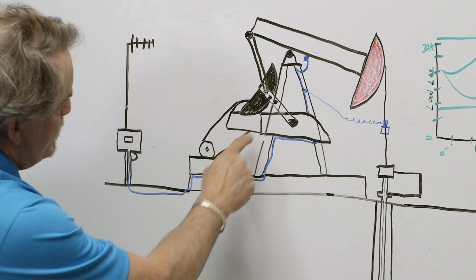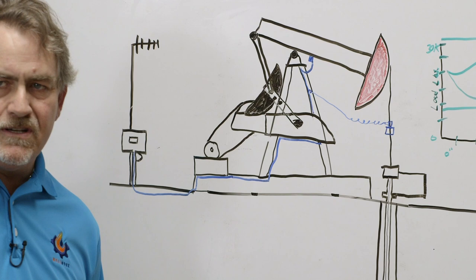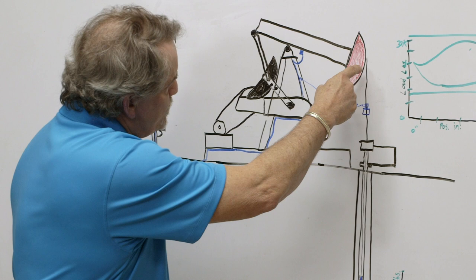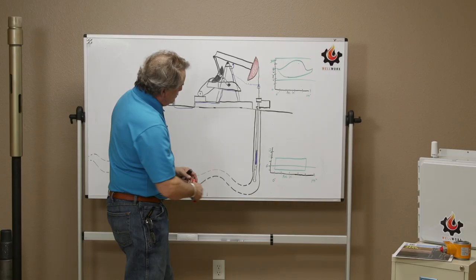Electric motor rotates belts, rotates the gearbox, which in turn rotates the crank. That pushes the pitman arm up, which is going to force the well head down. Connected to the horse's head is the polish rod, which attaches to the rod string.